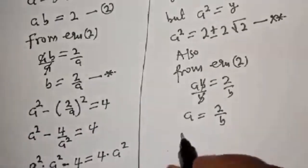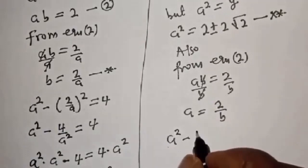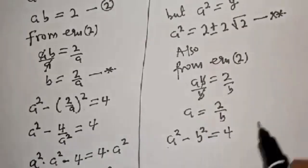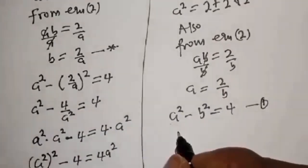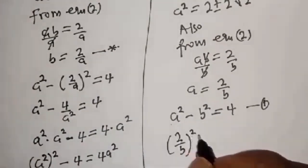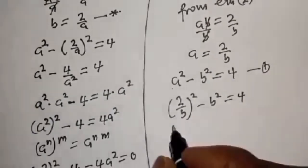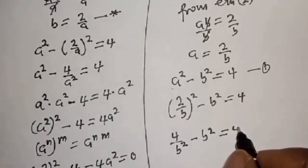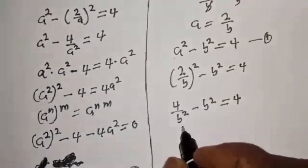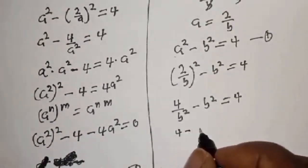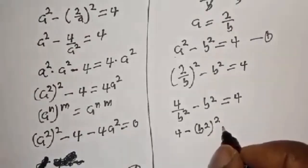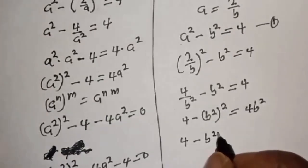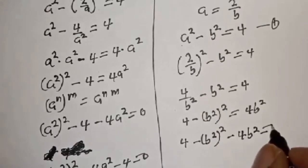Now let's substitute for a in equation 1: a squared minus b squared equals 4 becomes (2/b) squared minus b squared equals 4, that is 4 over b squared minus b squared equals 4. Multiplying all through by b squared, we get 4 minus b to the fourth equals 4b squared.